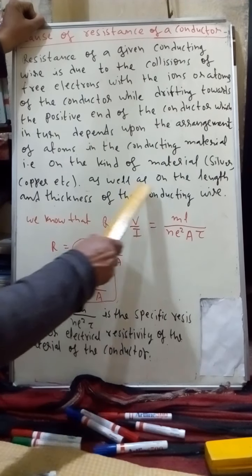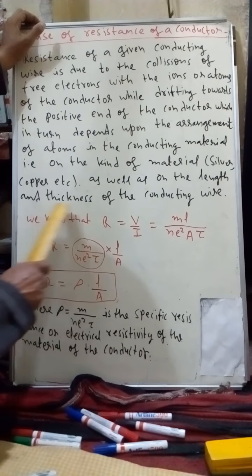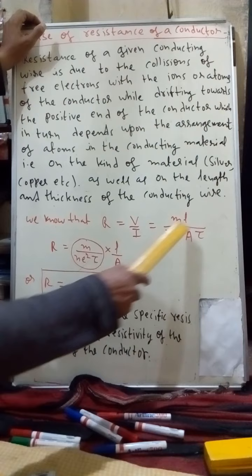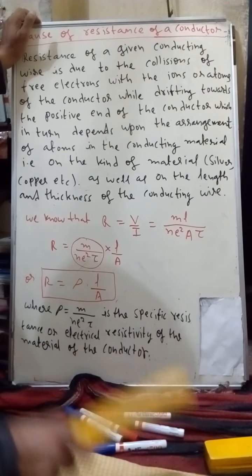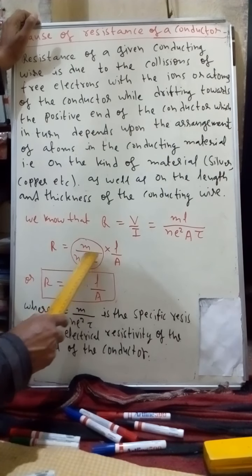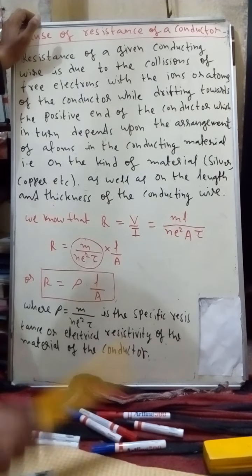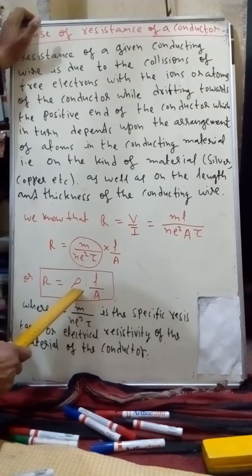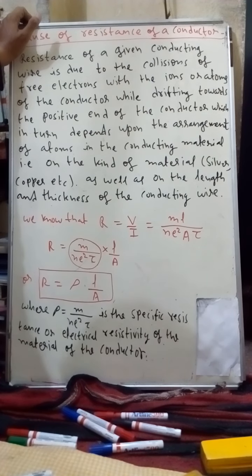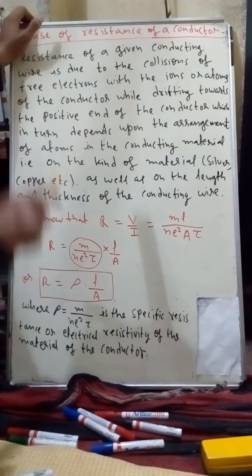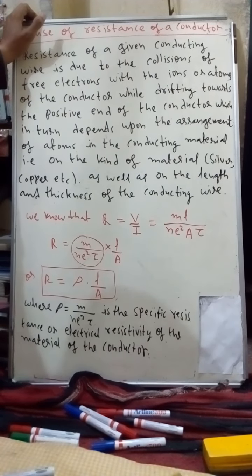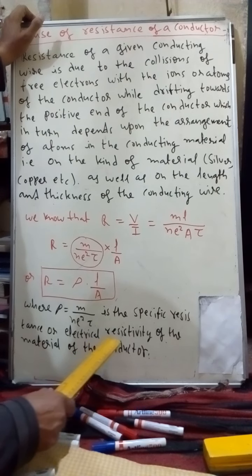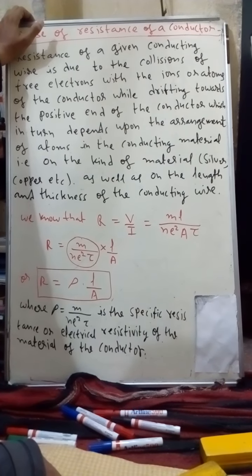Resistance also depends on the length and thickness of the conducting wire. As derived earlier when studying Ohm's law: R = ρL/A, where ρ (rho) is the specific resistance or electrical resistivity of the material of the conductor. Resistivity is a material property — it never changes and is fixed. The formula for resistivity: ρ = MA / (M² × τ), where τ is the relaxation time. This is the specific resistance and electrical resistivity of the conductor material.